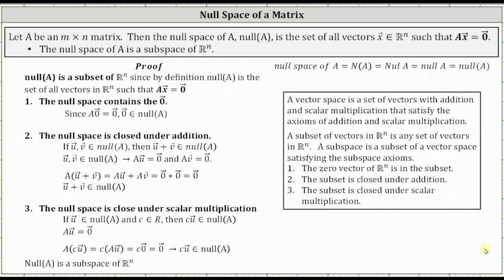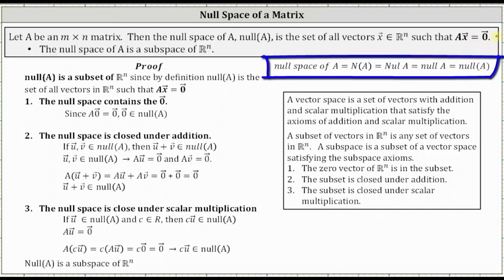Welcome to a proof that the null space of a matrix is a subspace. To begin, let A be an M by N matrix. Then the null space of A is the set of all vectors X in R^n such that matrix A times vector X equals the zero vector. There are several ways to denote the null space of a matrix, as shown here.